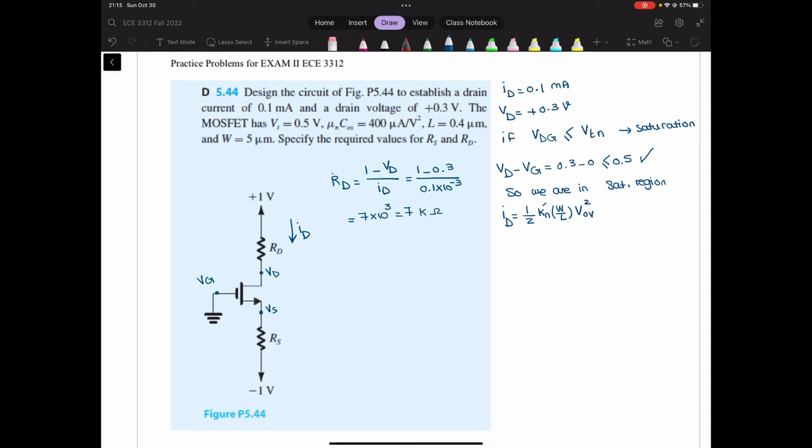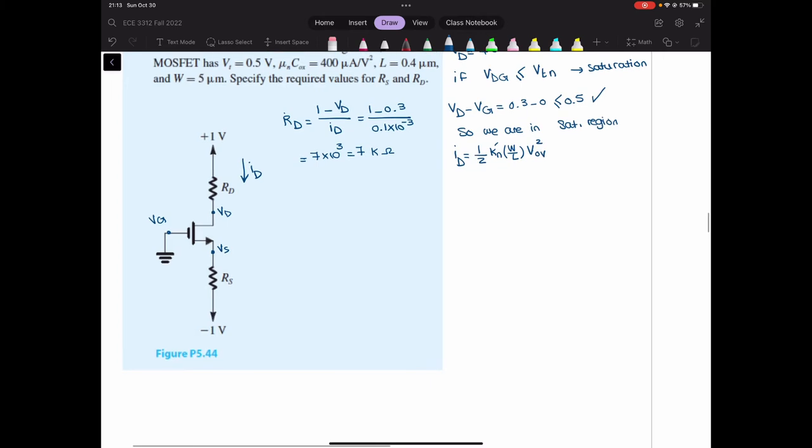So we found RD from there. Now, in order to find RS, I need to know what is VS, but I don't have VS available. So what I can do, I can use the ID equation that I wrote over here to find V overdrive. And I know that V overdrive is VGS minus VTN. So if I find V overdrive, then I can find VGS. And when I have VGS, I can find VS.